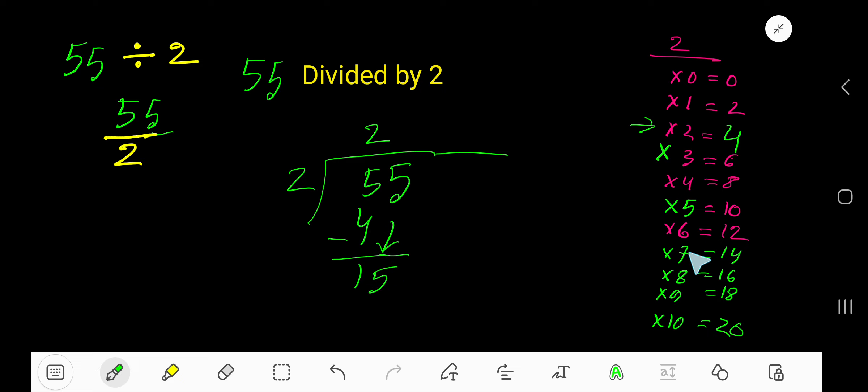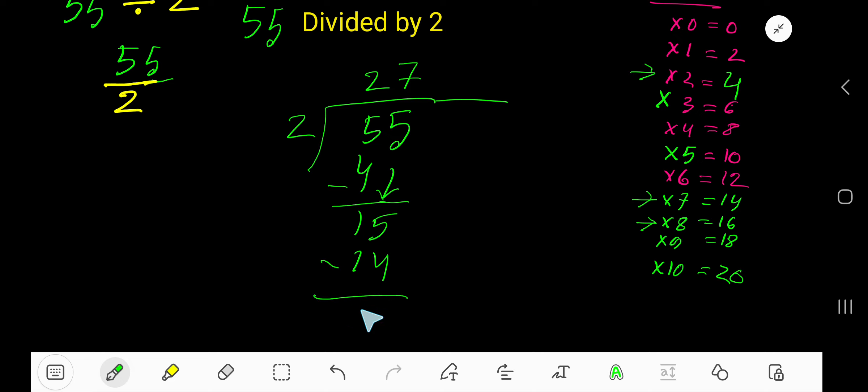2 goes into 14 how many times? 8 times 16 which is greater, so 7 times. 7 times 2 is 14. Subtract. So 27 remainder 1 is your answer.